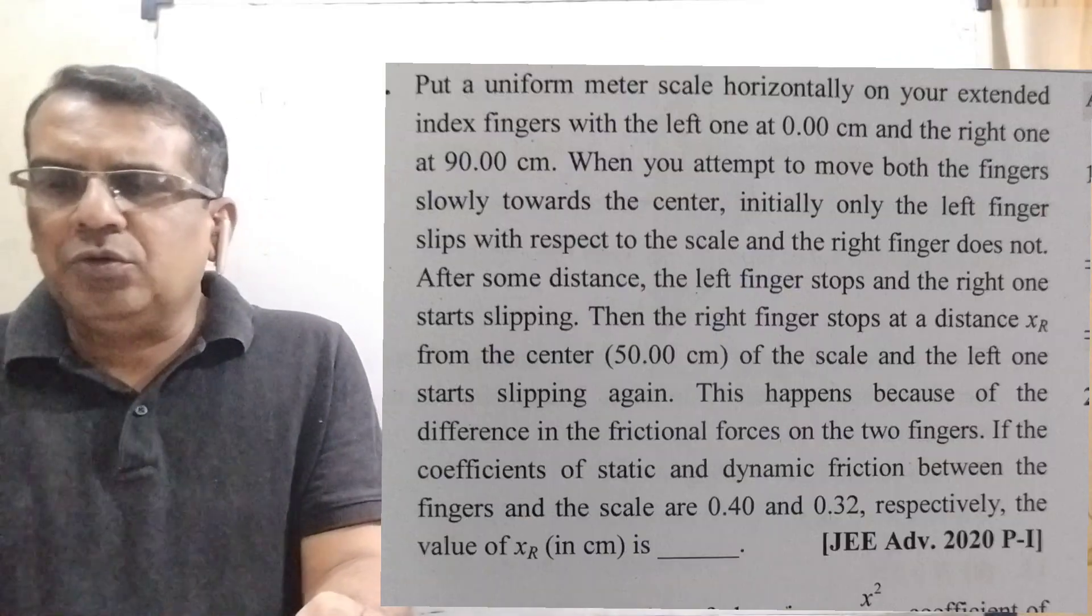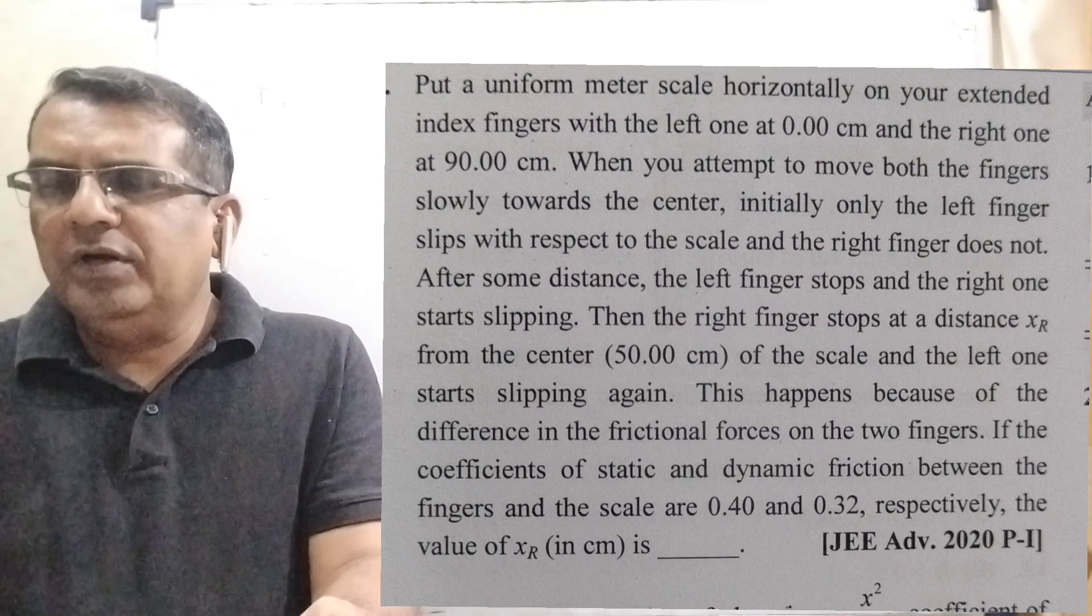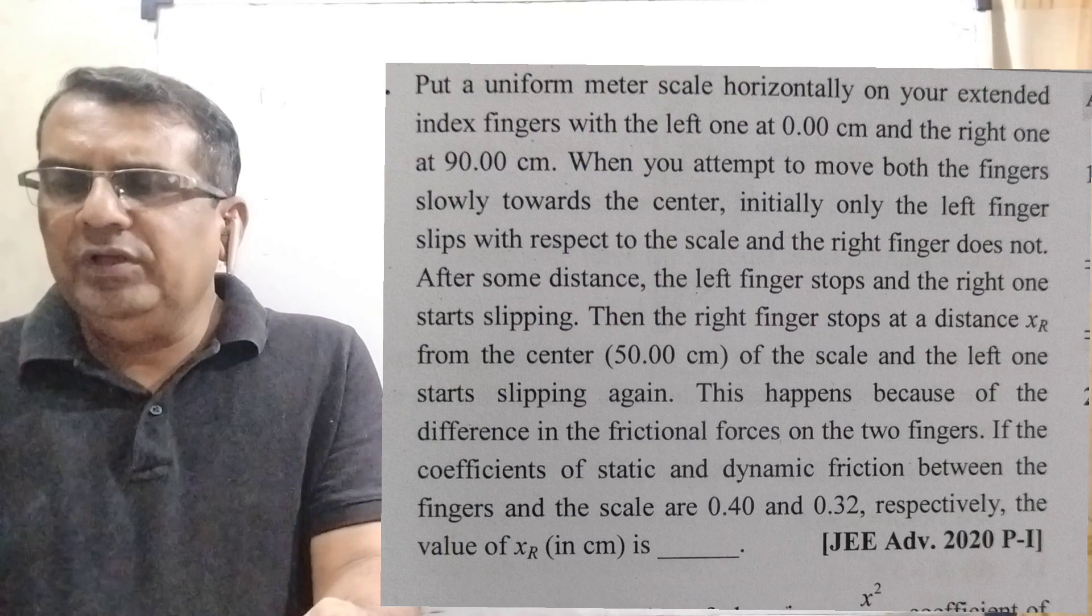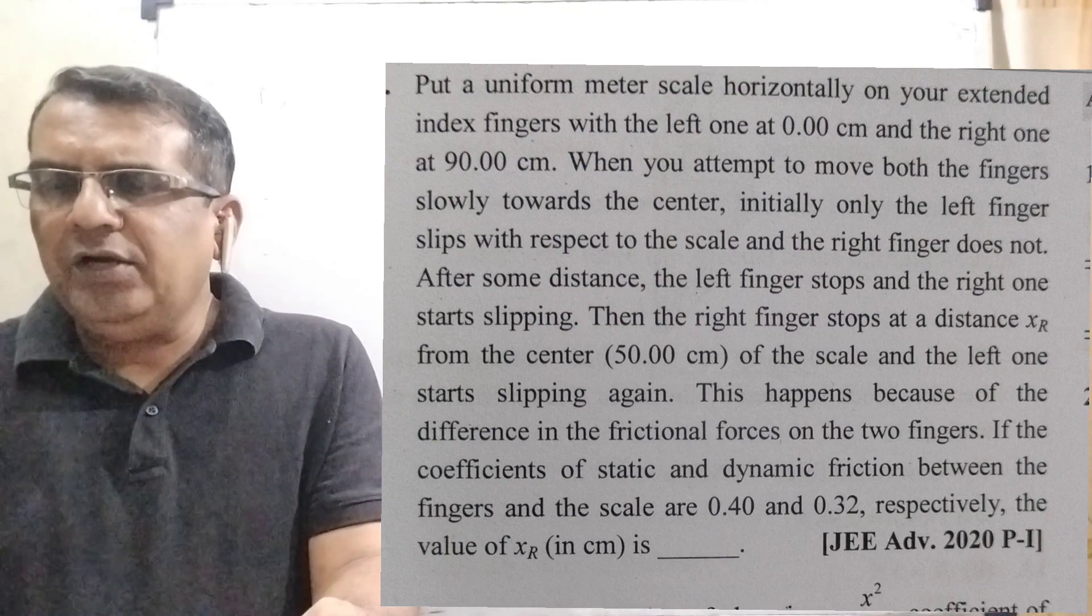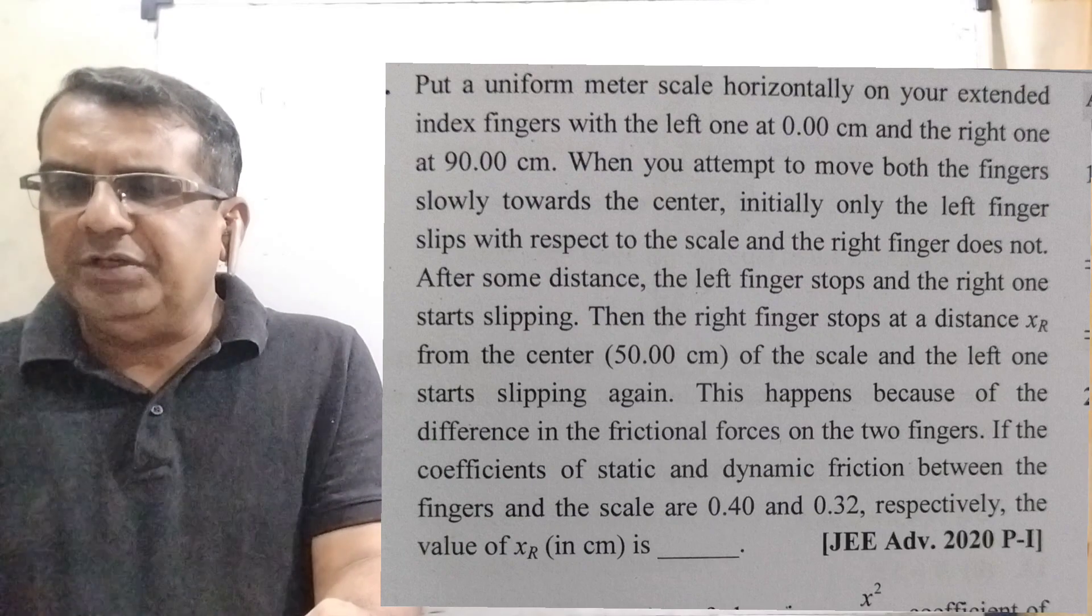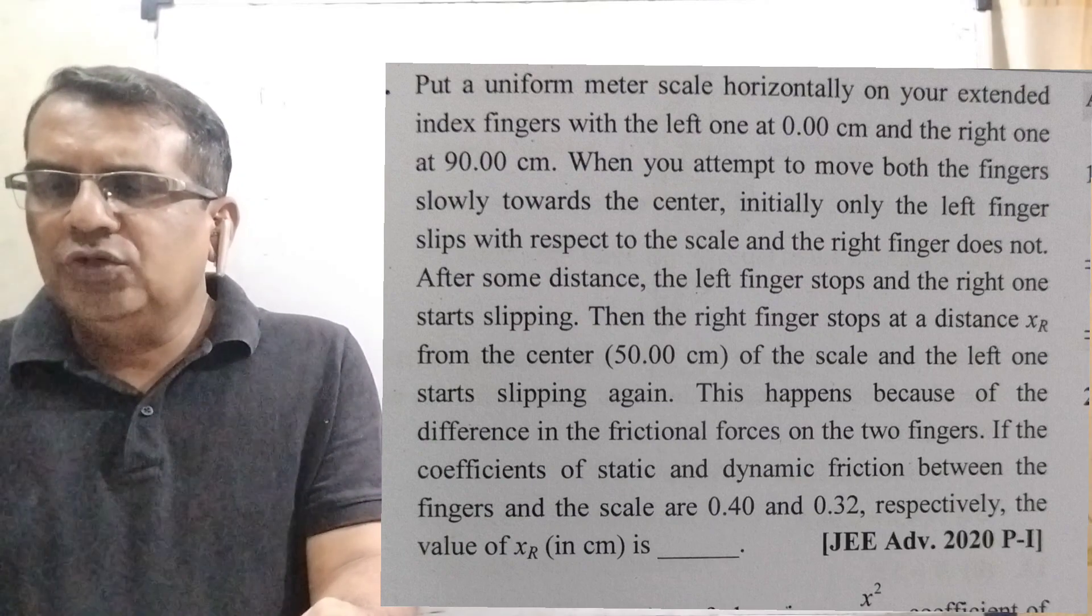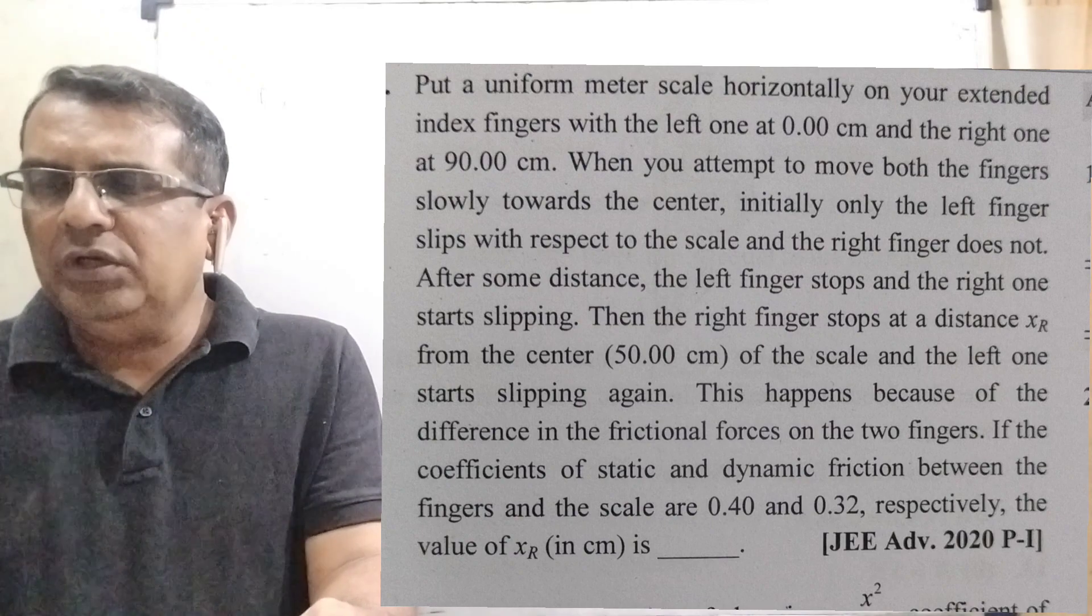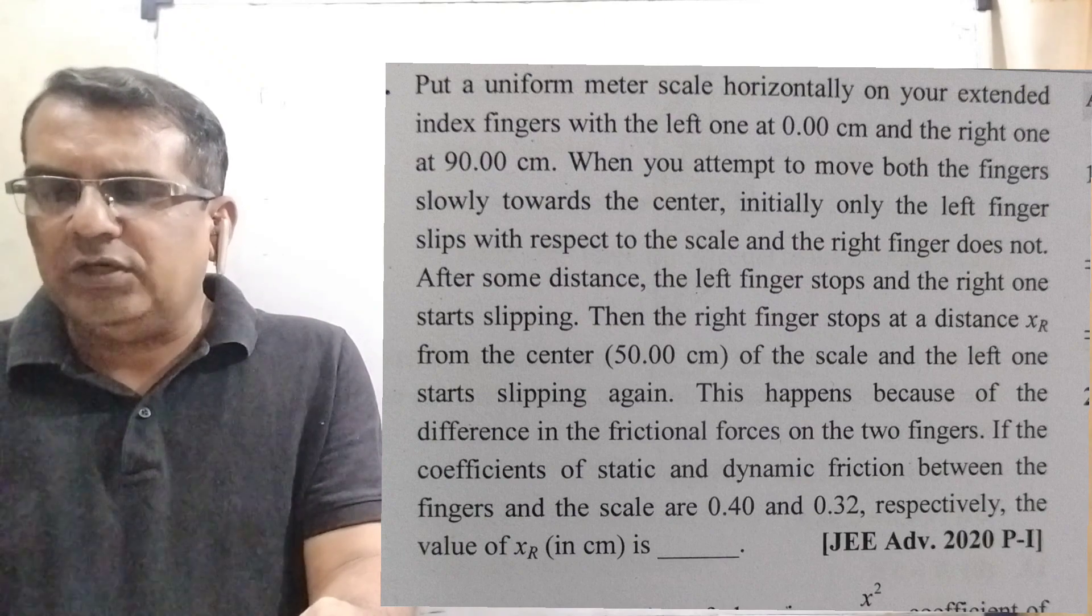Now here is the question. Put a uniform meter scale horizontally on your extended index fingers with the left one at 0.00 centimeter and the right one at 90 centimeter. When you attempt to move both fingers slowly towards the center, initially only the left finger slips with respect to the scale and the right finger does not.